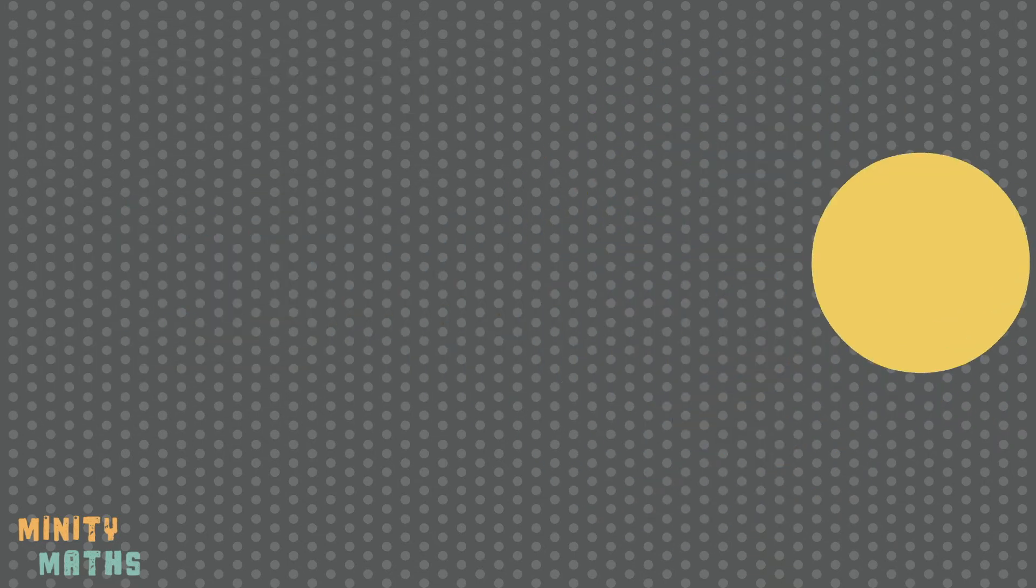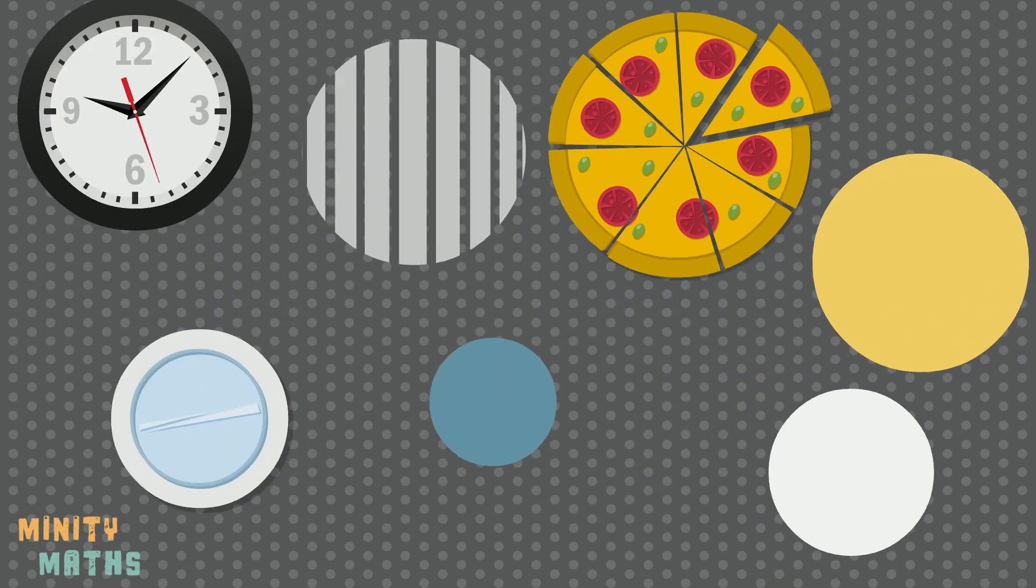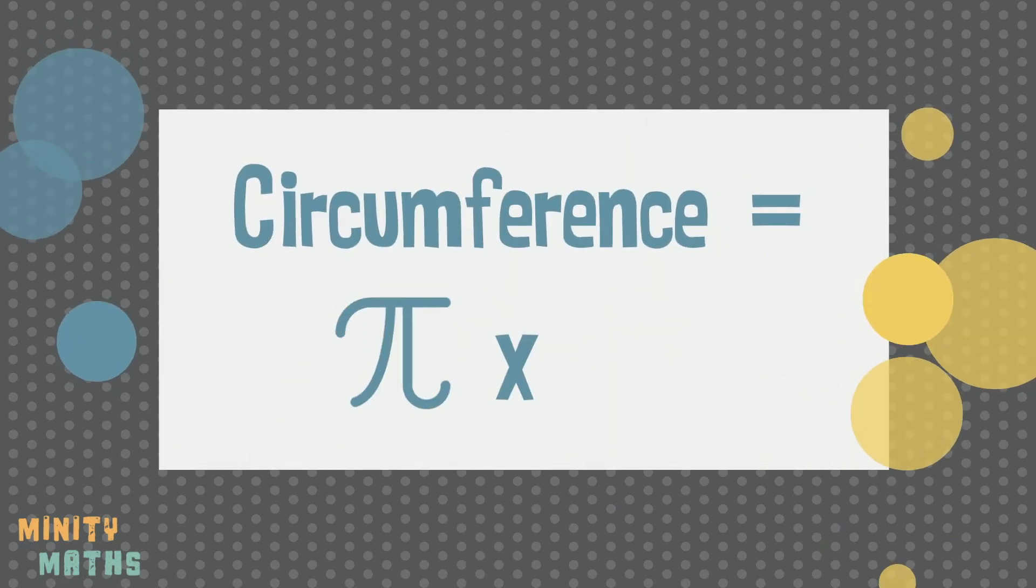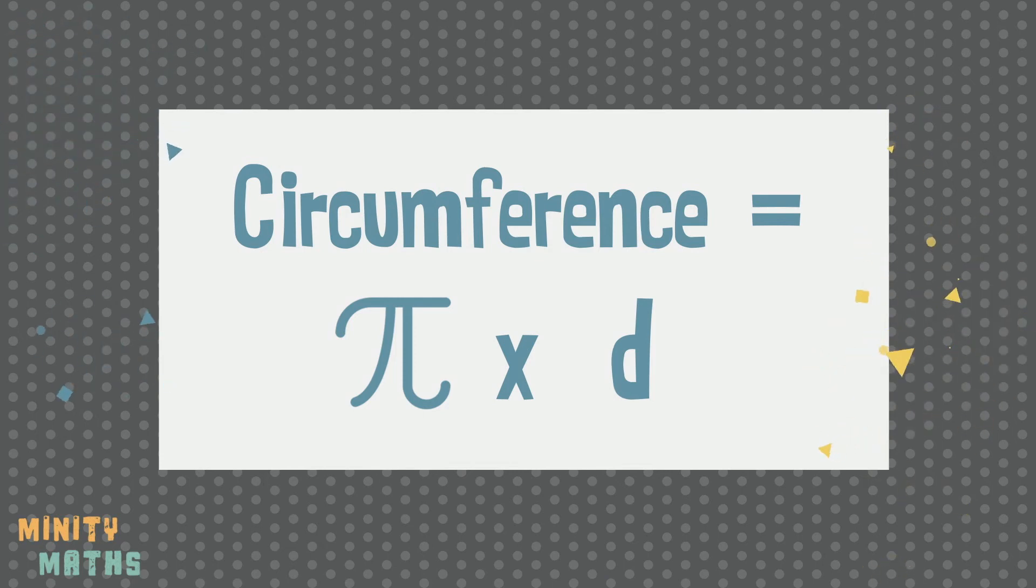This works for any circle no matter how big or small. It is with this special relationship between the diameter and pi that we can create the formula for finding the length of a circumference, pi times diameter.